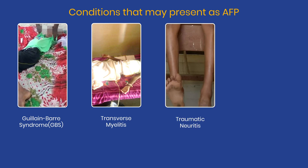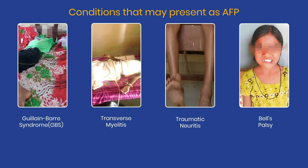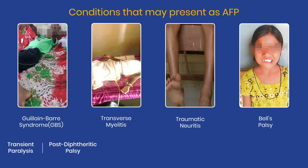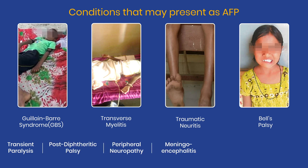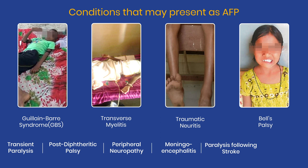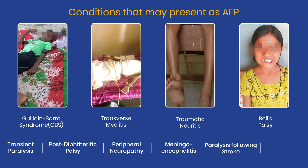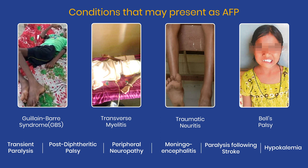Conditions that may present as AFP are Guillain-Barré syndrome, transverse myelitis, traumatic neuritis, Bell's palsy, transient paralysis, post-diphtheric palsy, peripheral neuropathy, meningoencephalitis, paralysis following stroke, hypokalemia, etc.